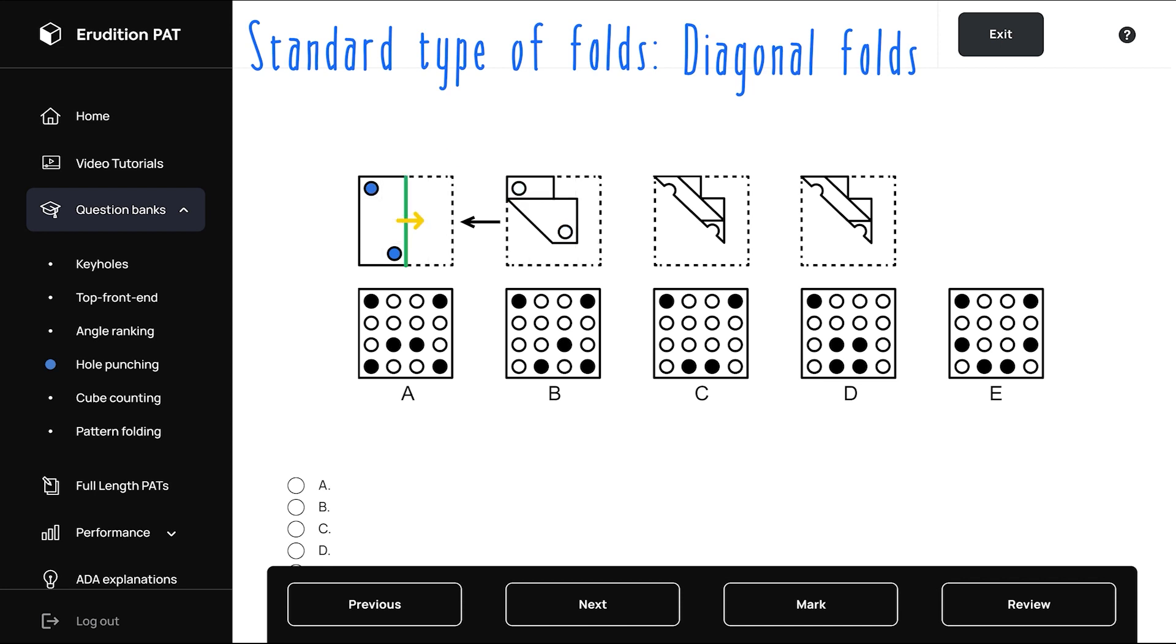And in the final fold, these two holes are reflected across the vertical axis. And this creates a pattern that matches choice C. So choice C is our answer.